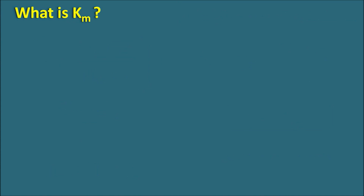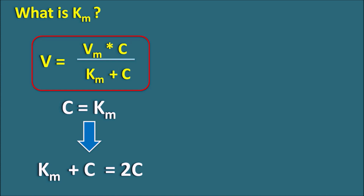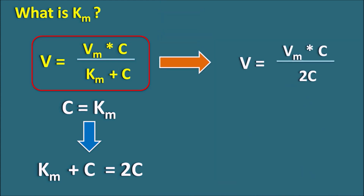Km is the Michaelis constant. To derive its meaning, let us set C = Km in the Michaelis-Menten equation. Then Km + C = C + C = 2C, and the equation becomes V = Vm × C / 2C = Vm / 2. This means the velocity of the reaction is half of the maximum velocity. Therefore, the Michaelis constant Km is defined as the concentration of substrate at which the velocity of the reaction reaches half of its maximum velocity.